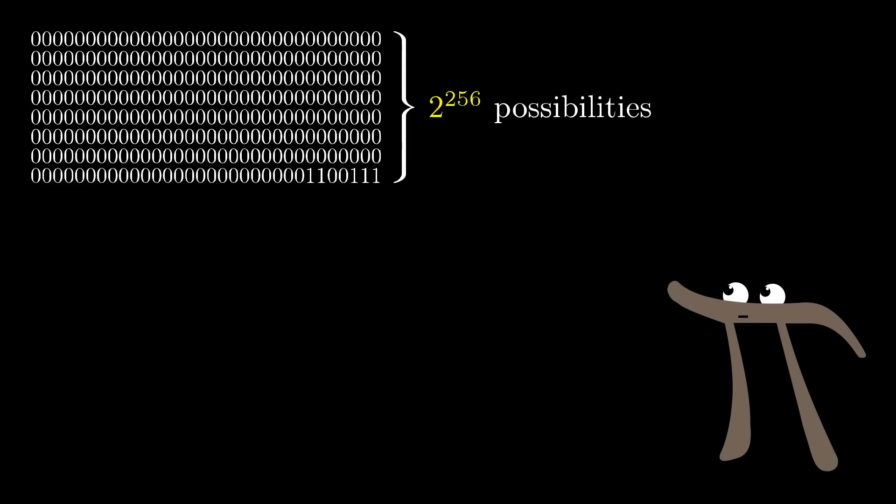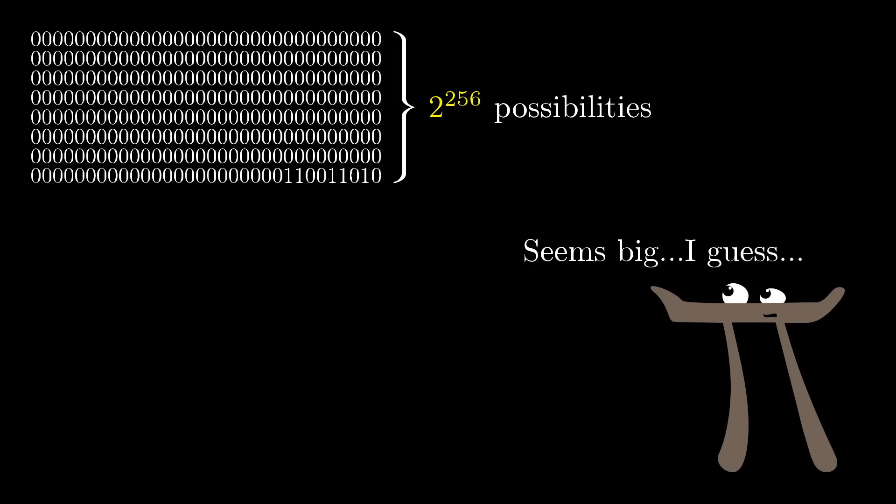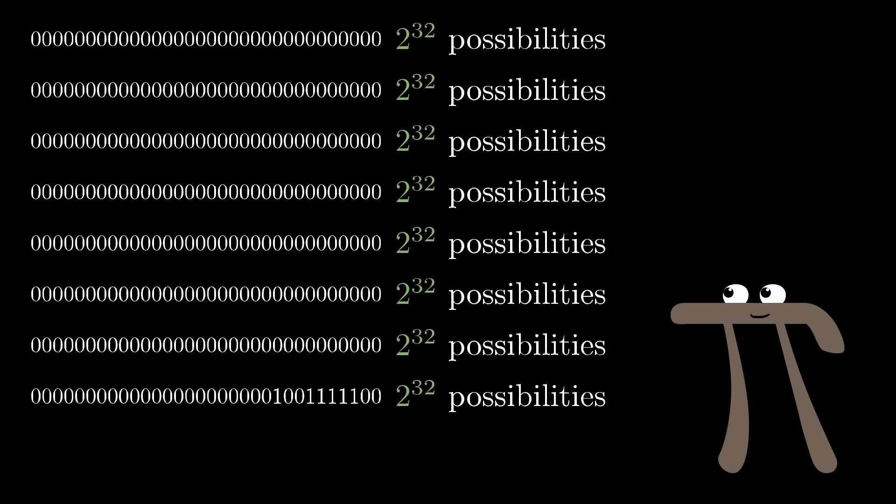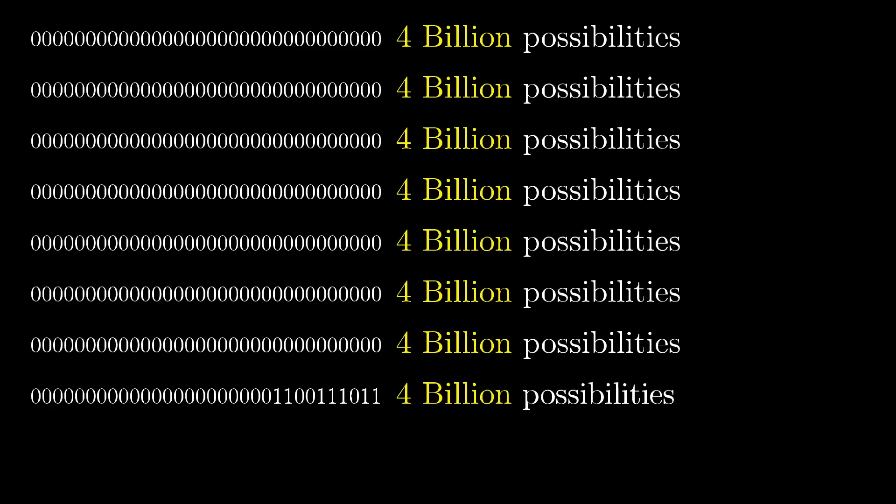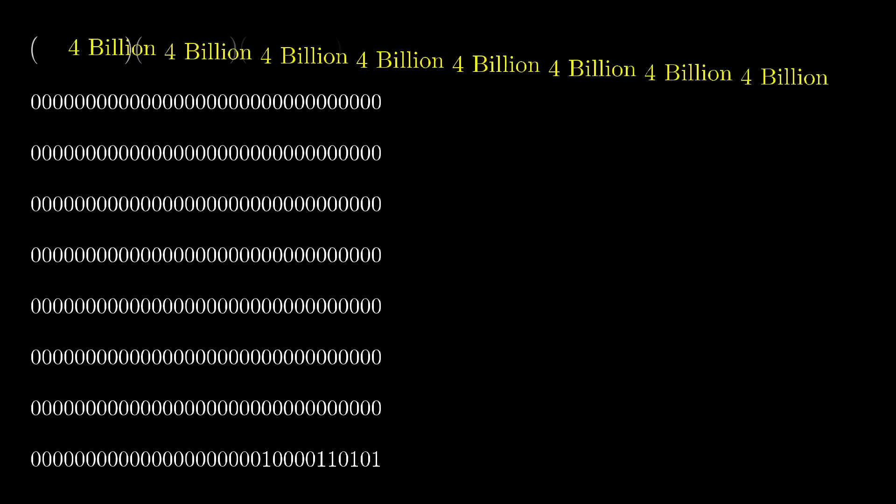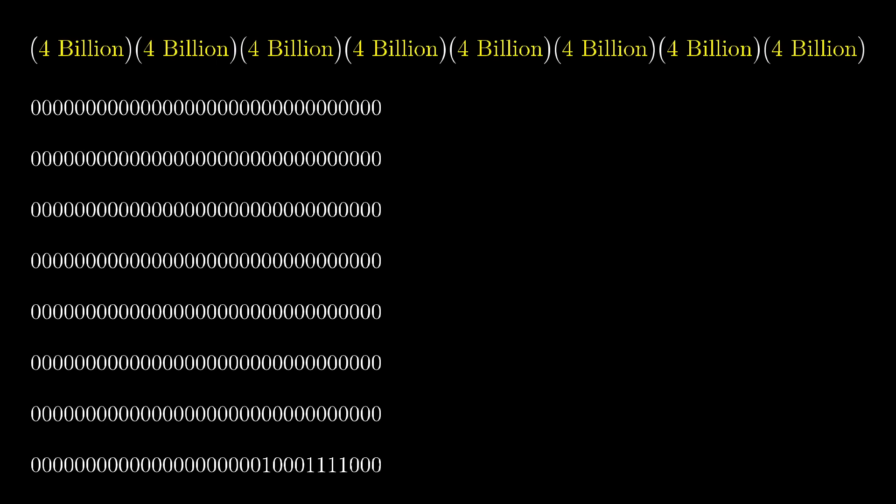Now this is a number so far removed from anything that we ever deal with that it can be hard to appreciate its size. But let's give it a try. 2 to the 256 is the same as 2 to the 32 multiplied by itself 8 times. Now what's nice about that split is that 2 to the 32 is 4 billion, which is at least a number we can think about. It's the kind of thing you might see in a headline. So all we need to do is appreciate what multiplying 4 billion times itself 8 successive times really feels like.